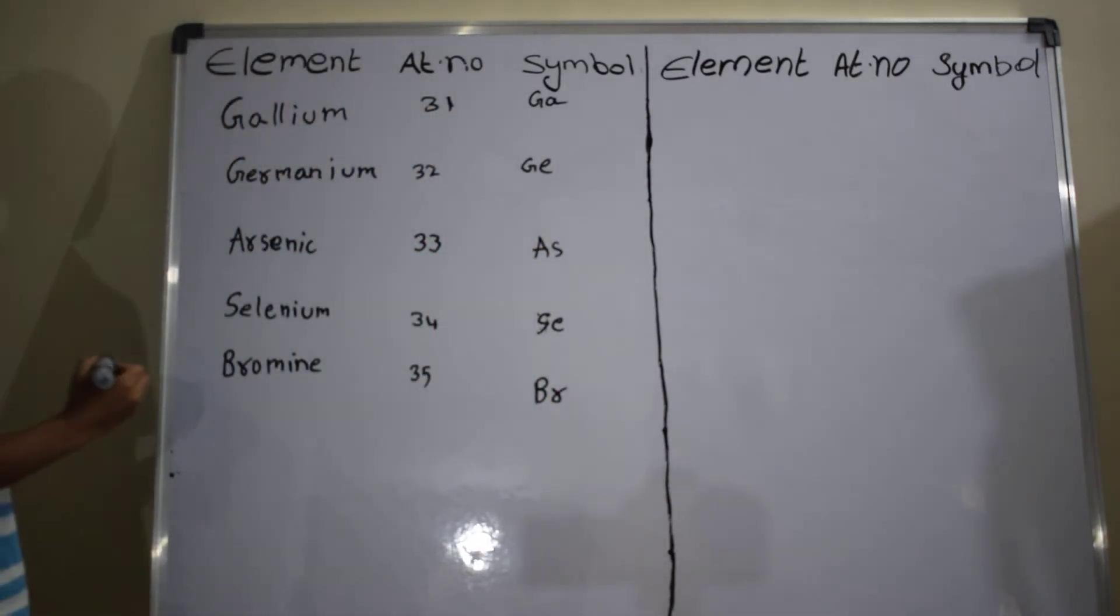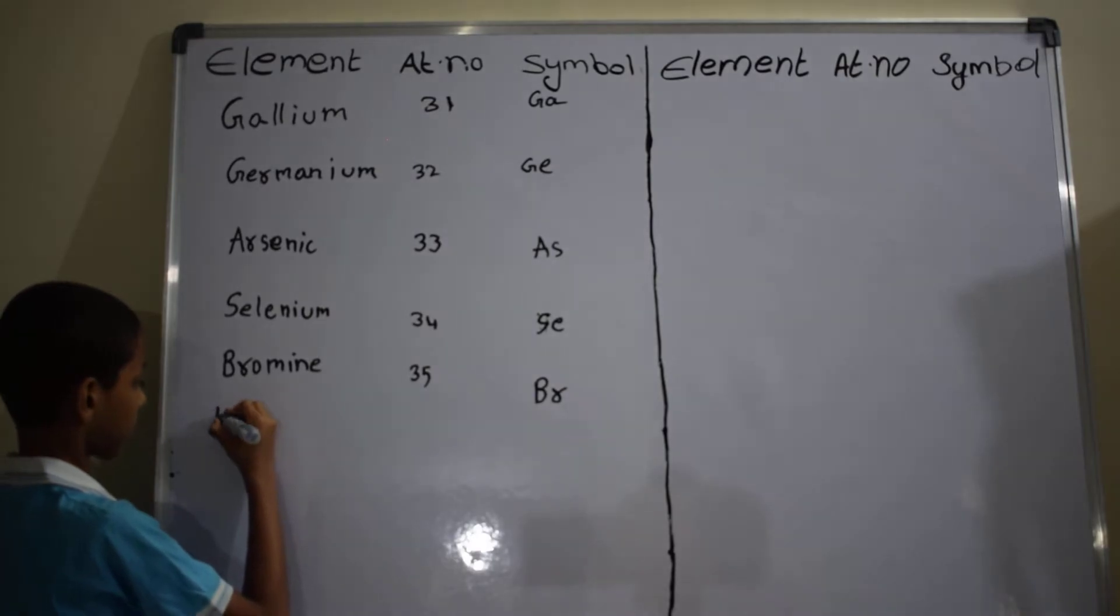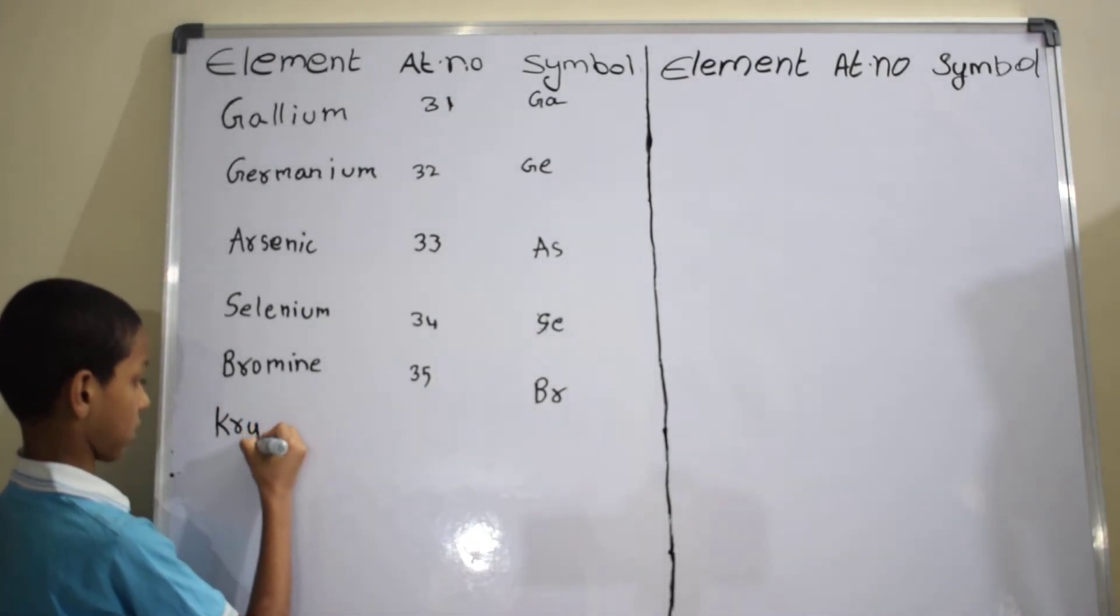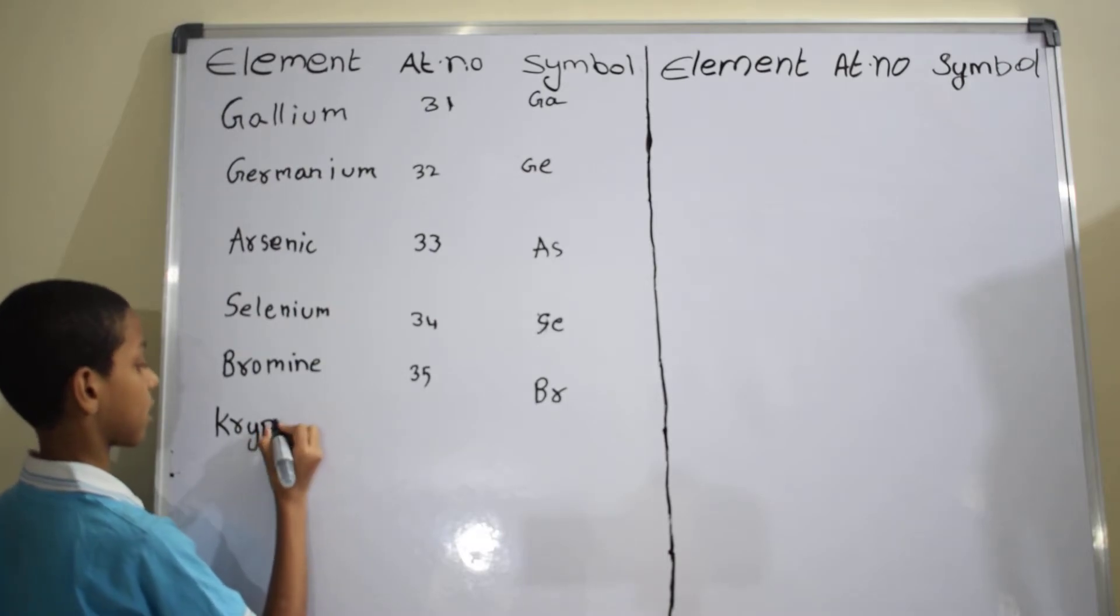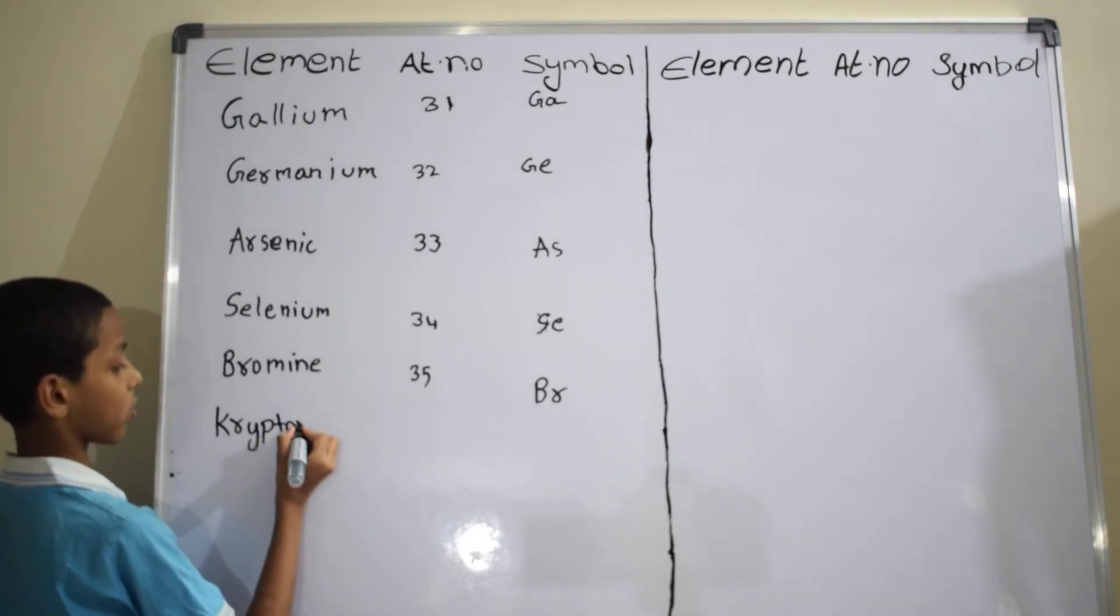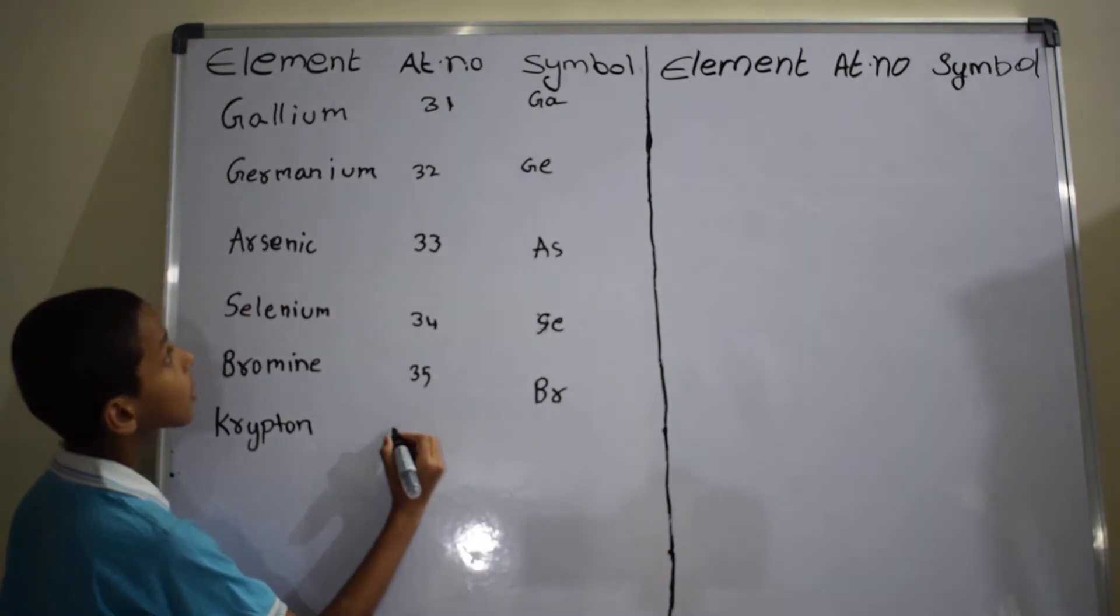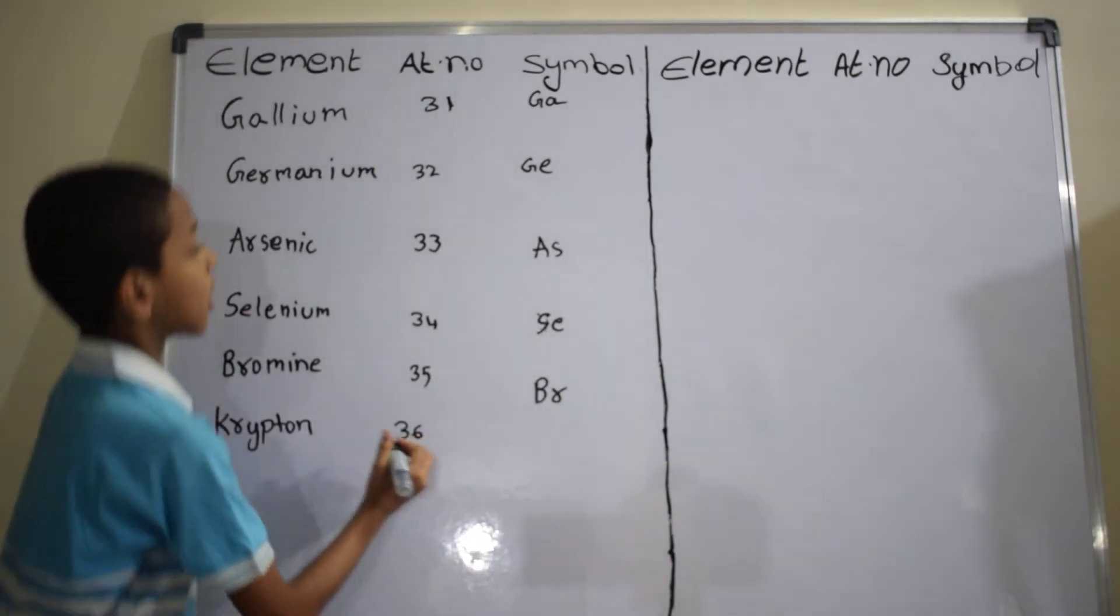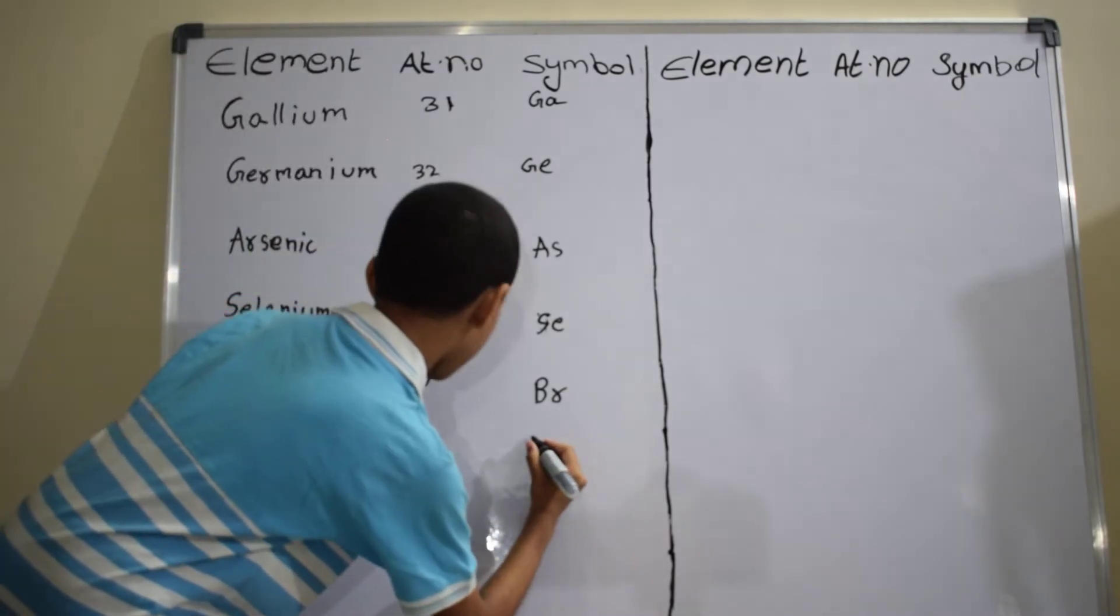Next element is krypton, K-R-Y-P-T-O-N. Atomic number is 36. Symbol is Kr.